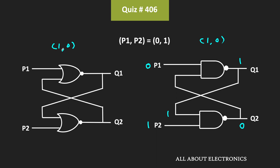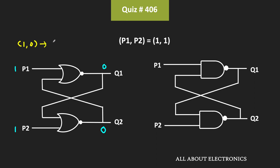Now let's see their outputs when P1 and P2 are both 1. First, let's see the output of this NOR gate based latch. Here, both inputs P1 and P2 are 1. For the NOR gate, when any one of the inputs is 1, then its output will be equal to 0. And therefore both outputs will be 0. That means initially the outputs of this NOR gate based latch were 1, 0, and later on it becomes 0, 0 — meaning both outputs of this NOR gate based latch will become 0.